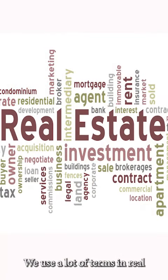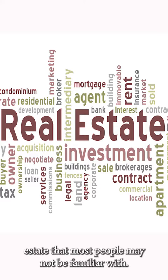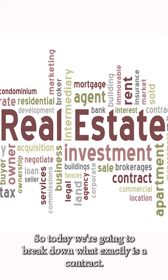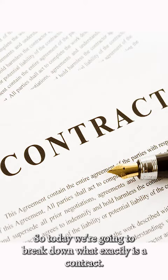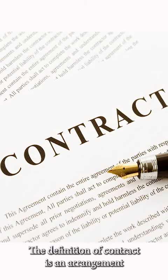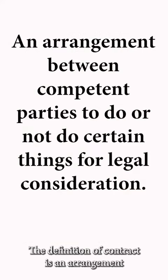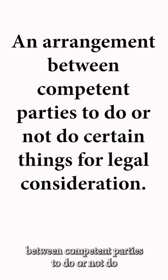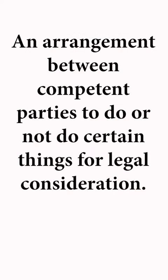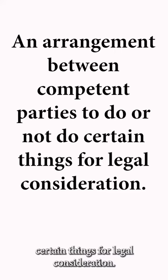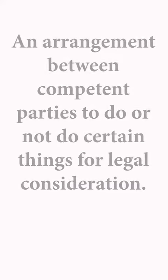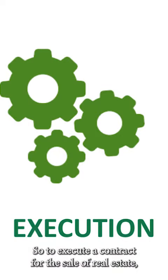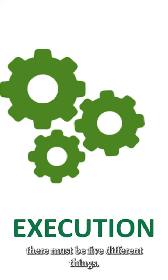We use a lot of terms in real estate that most people may not be familiar with, so today we're going to break down what exactly is a contract. The definition of contract is an arrangement between competent parties to do or not do certain things for legal consideration. To execute a contract for the sale of real estate, there must be five different things.